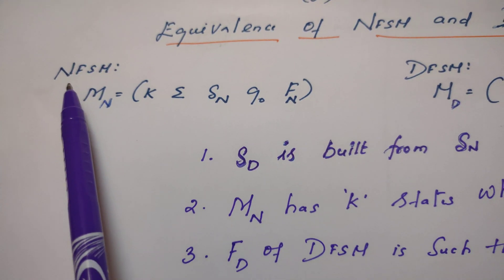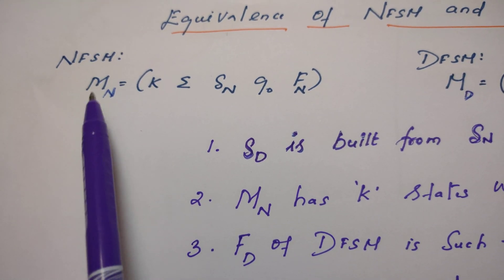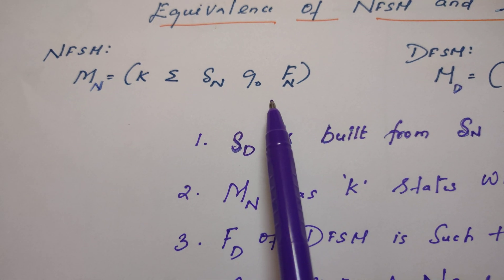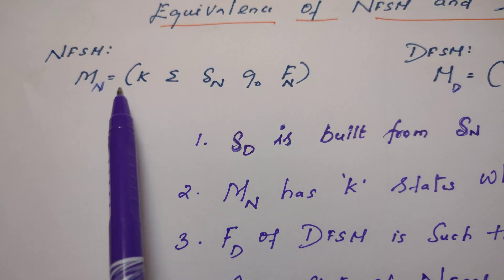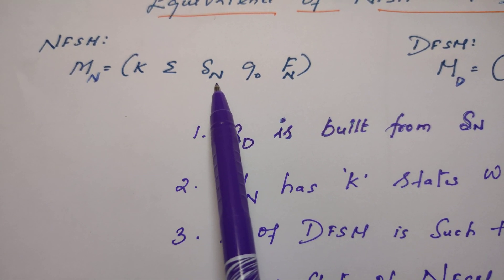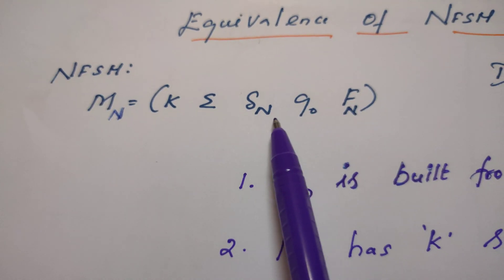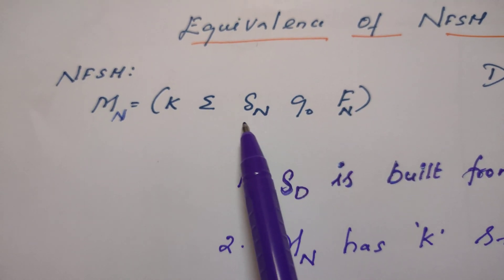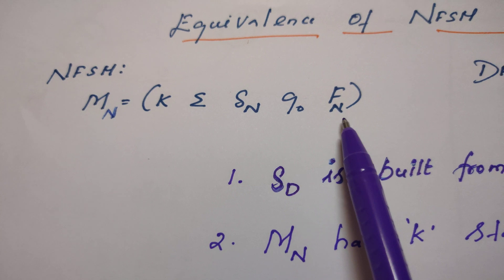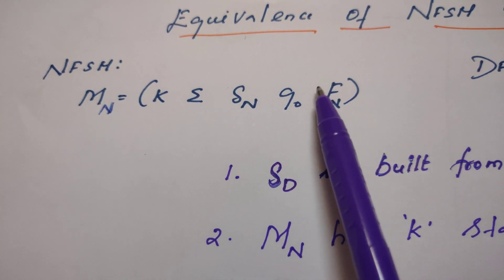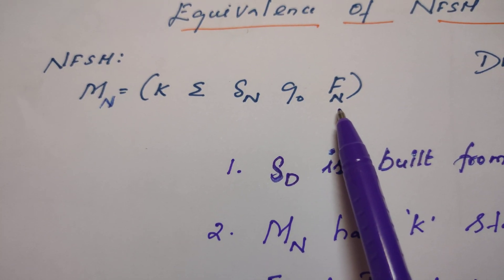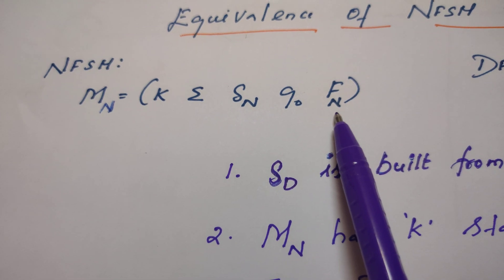NFSM is given here. NFSM, I call it as MN. It is defined by five tuples: K, sigma, del N — I have written del N just to indicate this transition function is for NFSM — Q0, and FN. F is nothing but the set of final or accepting states, and this N indicates NFSM.